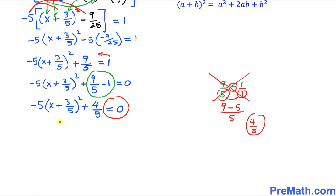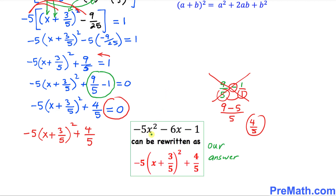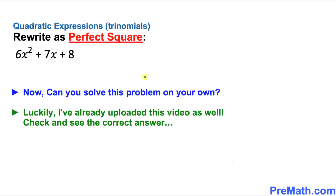Our final step: disregarding the zero, we focus on the left hand side. Negative 5(x + 3/5)² + 4/5 represents our perfect square form. Thus, negative 5x² minus 6x minus 1 can be rewritten as negative 5(x + 3/5)² + 4/5, and that is our answer.